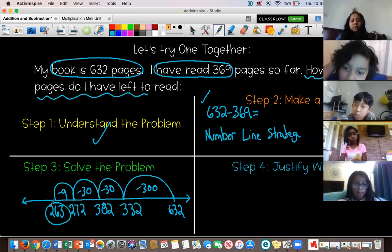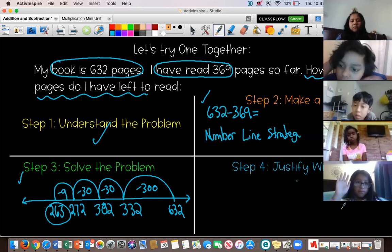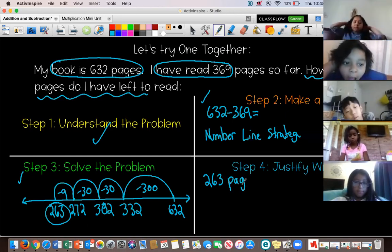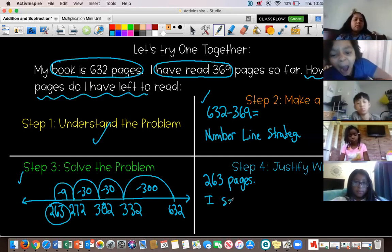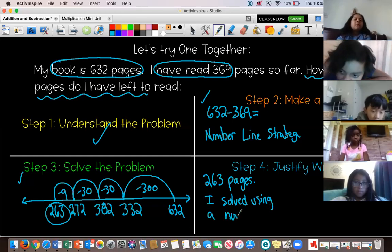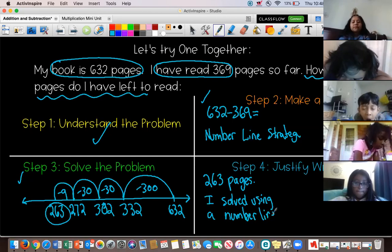Now, I go to my last part. Justify my answer in units. So what are my units? What am I talking about here? It's not miles. What is it, Cynthia? 263 what? What are we measuring in? It's not miles. What are we talking about this time? Pages. Pages. Very good. So 263 pages. And then I'm going to say, I solved using a number line. Okay?